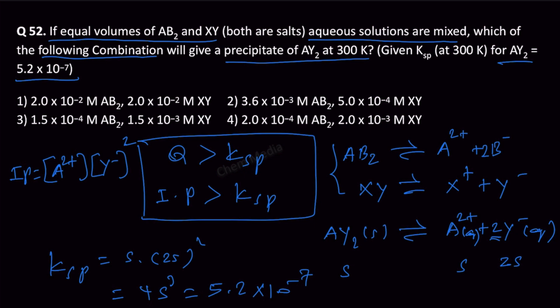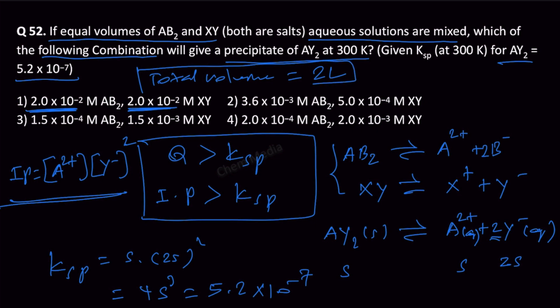This is very important to understand. The concentration of A²⁺ and Y⁻ here are before mixing. For example, if XY is 2 × 10⁻² molar, then [X⁺] = 2 × 10⁻² M and [Y⁻] = 2 × 10⁻² M before mixing. But once you mix equal volumes, the total volume will be doubled — the total volume becomes 2 liters. This is the key part to understand in this question, because concentration is number of moles divided by volume.